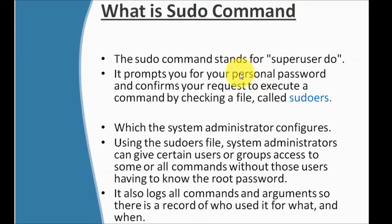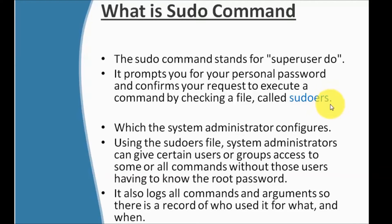Whenever we are running any sudo command, it asks for our password. Once we enter the password, it checks a file called sudoers. In the sudoers file, all the commands that can be executed by a particular user as root are mentioned. As a root user, I don't want to give access to all commands to other users. So I will make entries for specific commands in the sudoers file along with the username. Whenever a user wants to execute a command not permitted to all users, they will use sudo because special permission has been given to that particular user in the sudoers file.